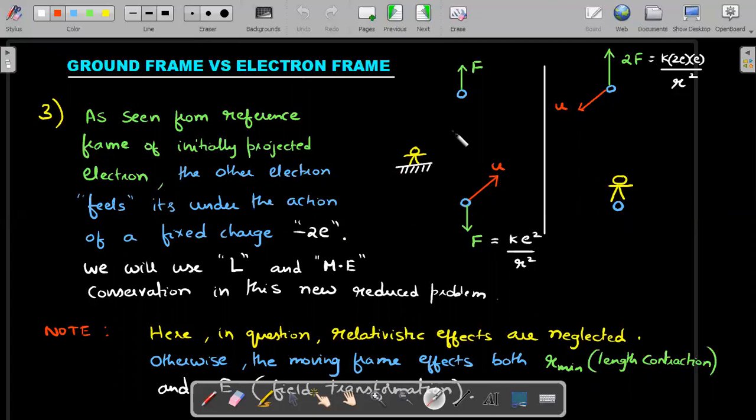For the ground frame, as you could see, one electron is projected with a speed u as given in the question, and this capital F and capital F are the repulsive forces on the free body diagram of these electrons. Value of F should be Ke²/R².